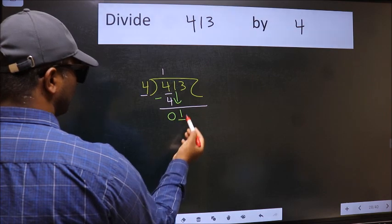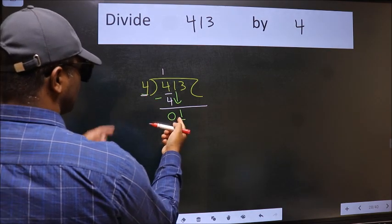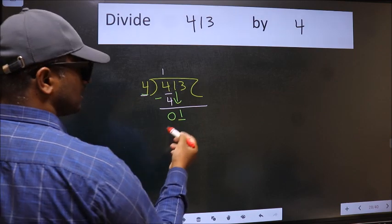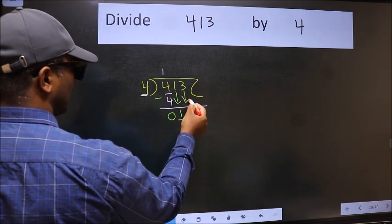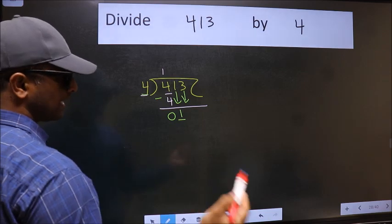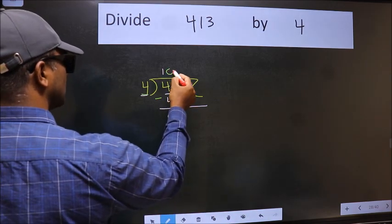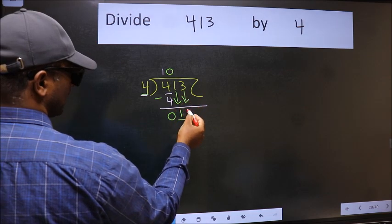Now here we have 1 and here 4. 1 is smaller than 4. So we should bring down the second number. And the rule to bring down second number is we should put 0 here. Then only we can bring this number down.